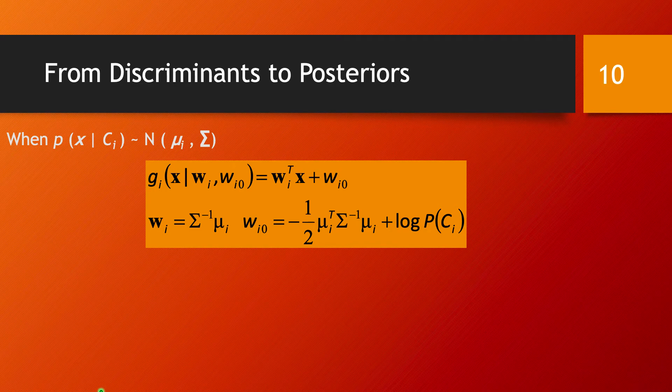Let's discuss classification with linear discriminants in the case that the data is normally distributed. This is something we also had in the first part of this course, but I want to go back briefly to that case and discuss how you can classify with linear discriminators.